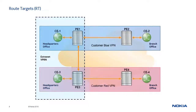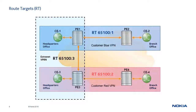Extranet VPRN services are implemented by managing route targets or RTs and properly configuring virtual route forwarding or VRF import and export policies. Each customer VPN uses one RT to identify its routes. An additional RT is then used to identify routes to be shared. In this example, RT65100:1 identifies the blue VPN routes, RT65100:2 identifies the red VPN routes, and routes shared between the two VPNs are identified by RT65100:3.